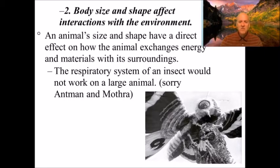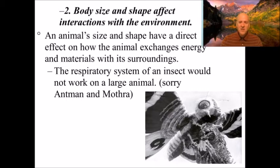If you took an ant and made it the size of a dog it would die very quickly — and that's not even talking about the metabolic rates and other things that would have to change. In the past we've had dragonflies with about a six-foot wingspan, but that's because there was more oxygen in the air at the time. Similarly, if you brought back a brontosaurus or a T-rex, there was more oxygen then — those animals would not be able to survive in our atmosphere today.